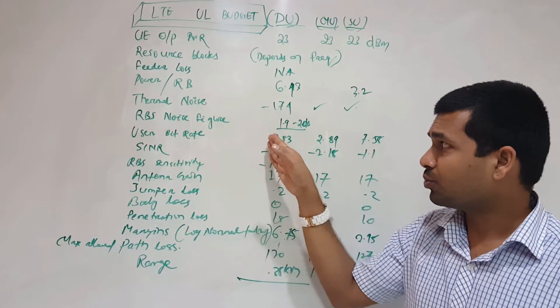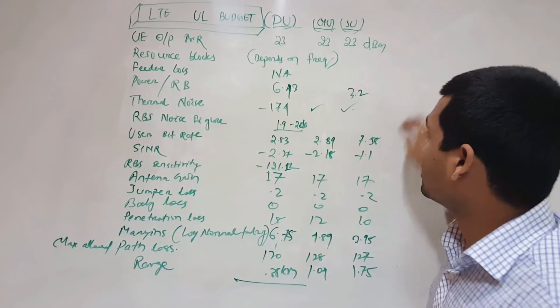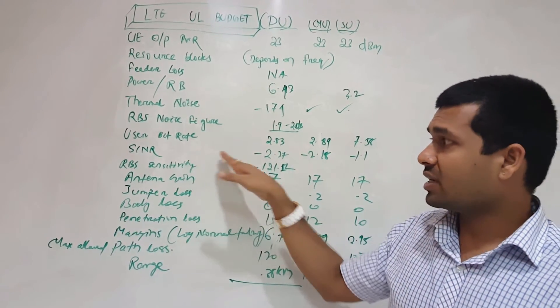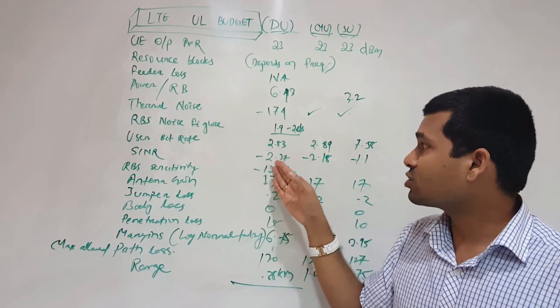So for CQI one it is 2.27 minus 2.27. Radio base station sensitivity minus 121.12. Antenna gain 17 dBm from the base station side.